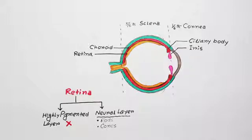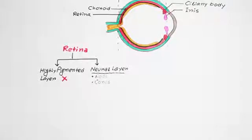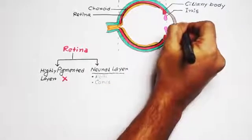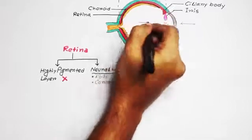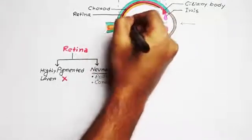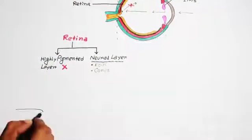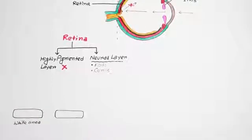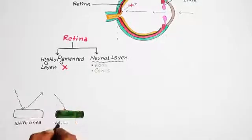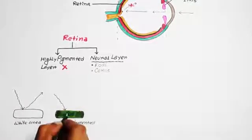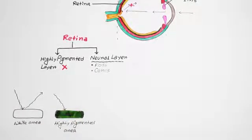You must be wondering, why is it hyperpigmented and what's the use of hyperpigmentation? Well, when light comes into our eyeball, it should get absorbed first, shouldn't get reflected, otherwise the image will be destroyed. As we know, highly pigmented areas absorb light better than white or poorly pigmented areas. That's why this inner retinal layer is highly pigmented.